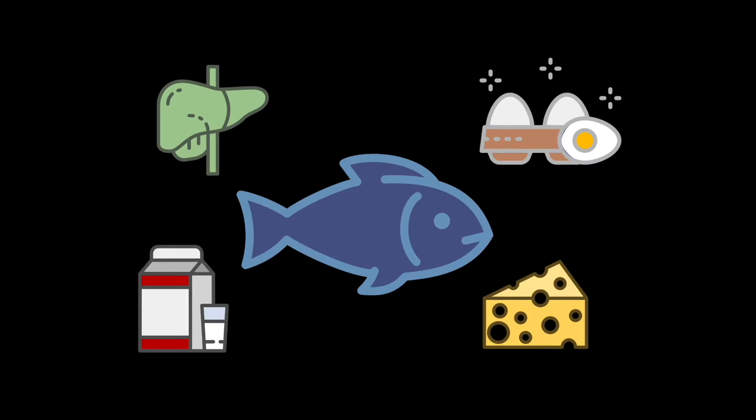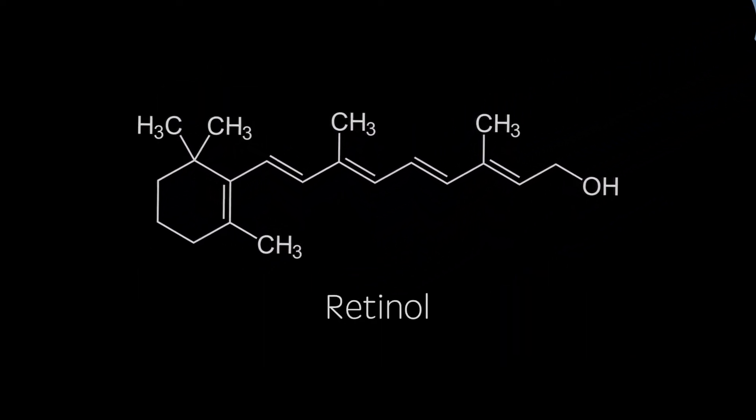Vitamin A can be found in a variety of food products, including liver, eggs, dairy products and oily fish. Vitamin A is also known as retinol.